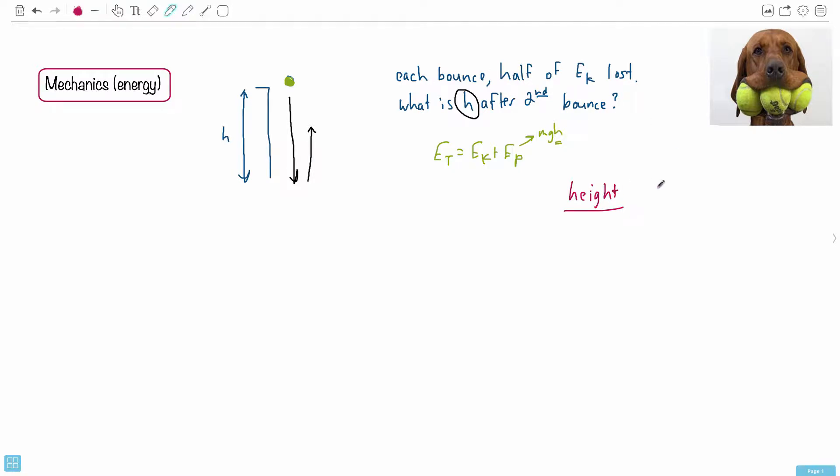This is the key thing with each bounce. That is the key to solving this. Now all we have to do is look at this question and break it down into different heights. If it starts off as height one, after one bounce, this is gonna be bounce number one.